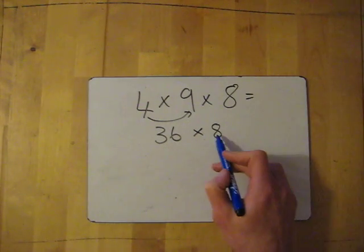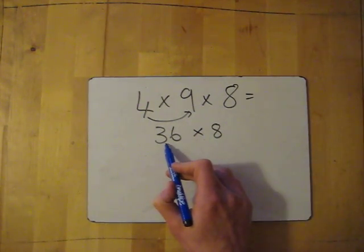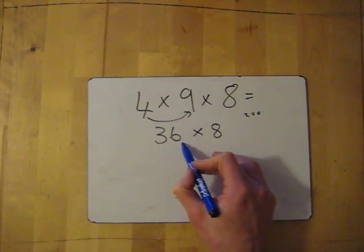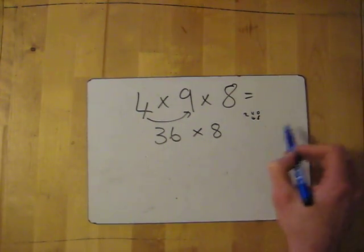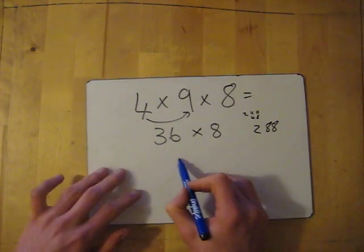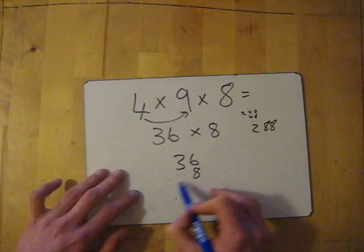Two ways you can do it. You could do it in your head: do it times 30, which is 240, then times 6, which is 48, and then add them together in your head, which should give you 288.